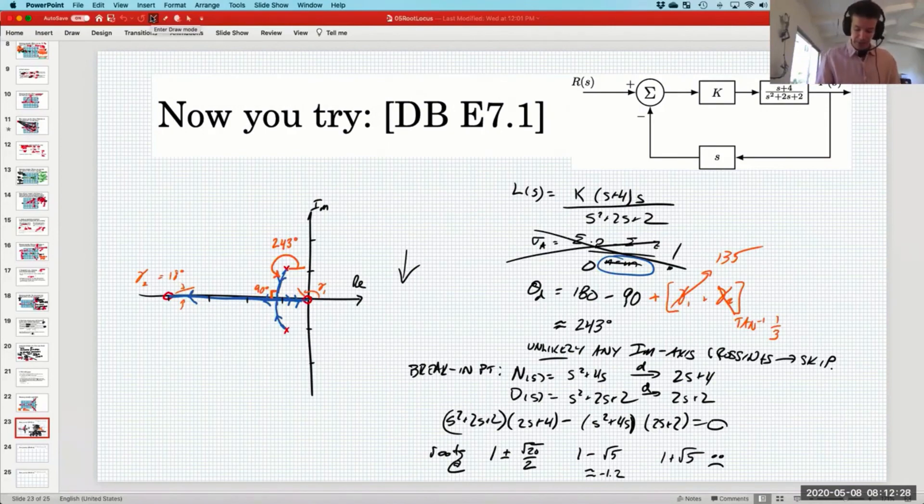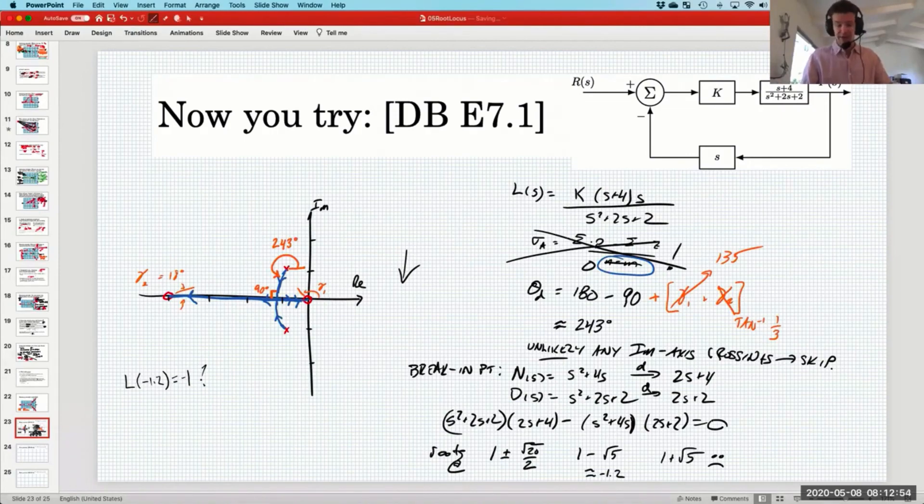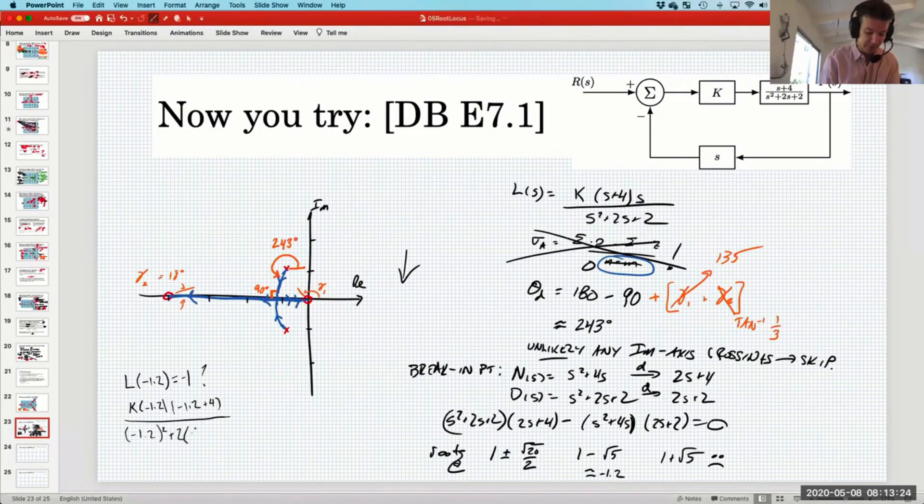If we want to solve that, then we're asking what is the k that makes L of negative 1.2 equal to negative 1? We know from our analysis that s equals negative 1.2 is a valid closed loop pole location for some k, and now we're trying to ask which k is that. So I think what we want to do is just take our expression for the open loop transfer function and plug in s equals negative 1.2, just treat it like a regular function.